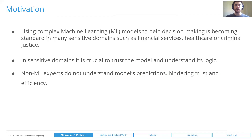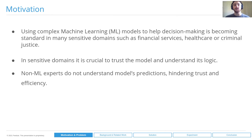Using complex machine learning models to help decision making becomes really standard in different sensitive domains, such as financial crimes, healthcare, or criminal justice, where a wrong decision can have really severe consequences. So it's really crucial in those sensitive domains to trust the model and understand its logic, what is happening inside the model, and why the model is making such predictions. Non machine learning experts, for instance fraud analysts or medics, do not understand the model's predictions, hindering the trust and efficiency.